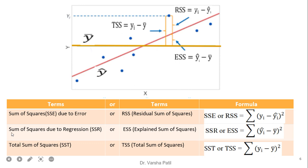Next is sum of squares due to regression, or explained sum of squares. ESS means how much error can be explained by the prediction, because the result based on prediction is always better than the average. So it takes the difference between the predicted value and the average value — that is, summation of (Y-cap minus Y-dash) squared.